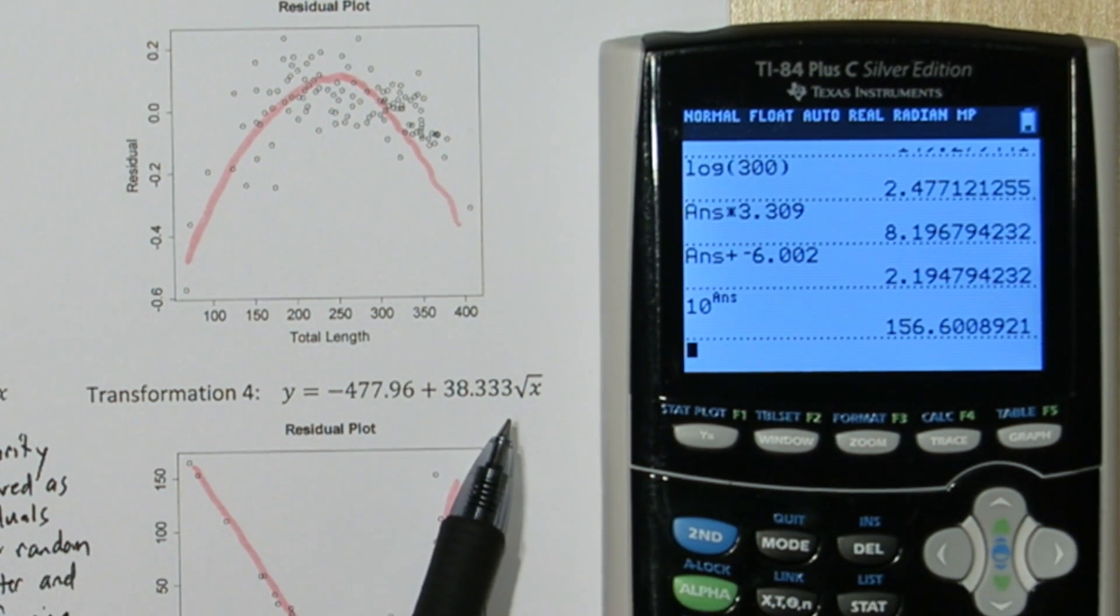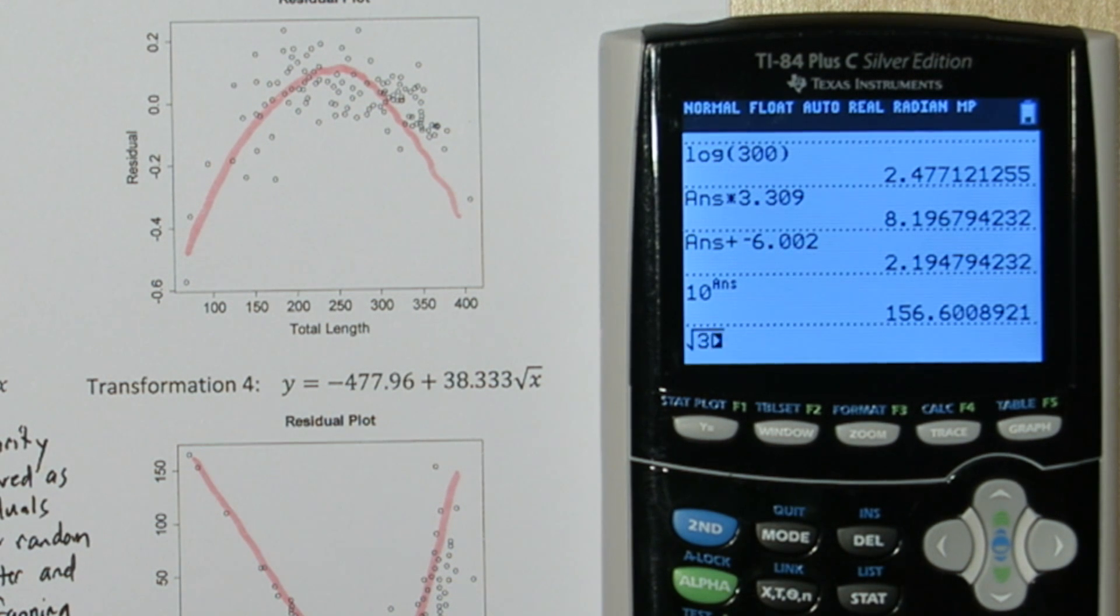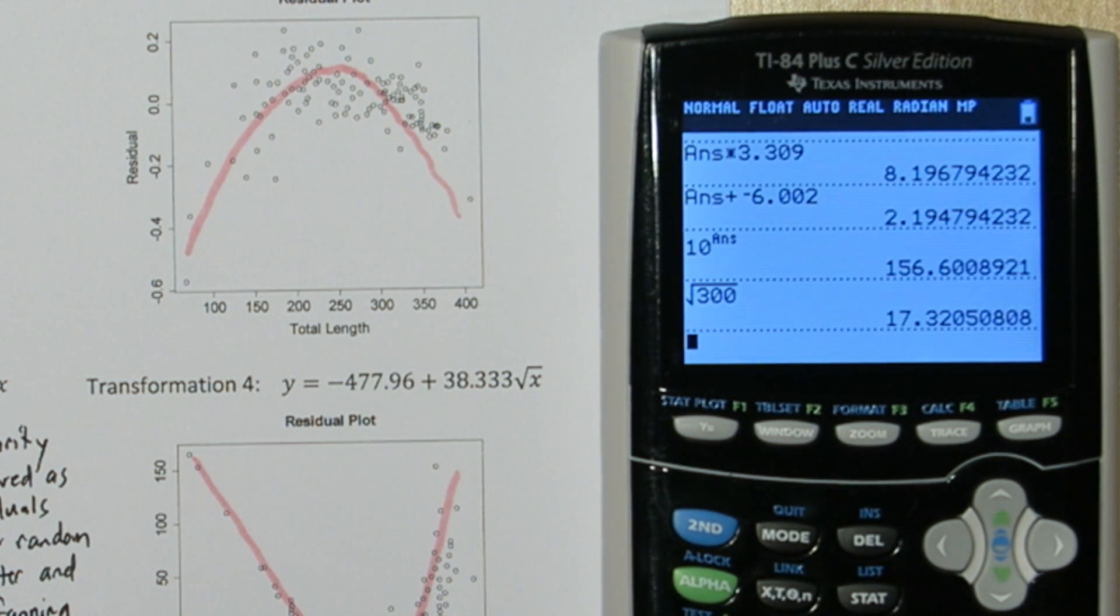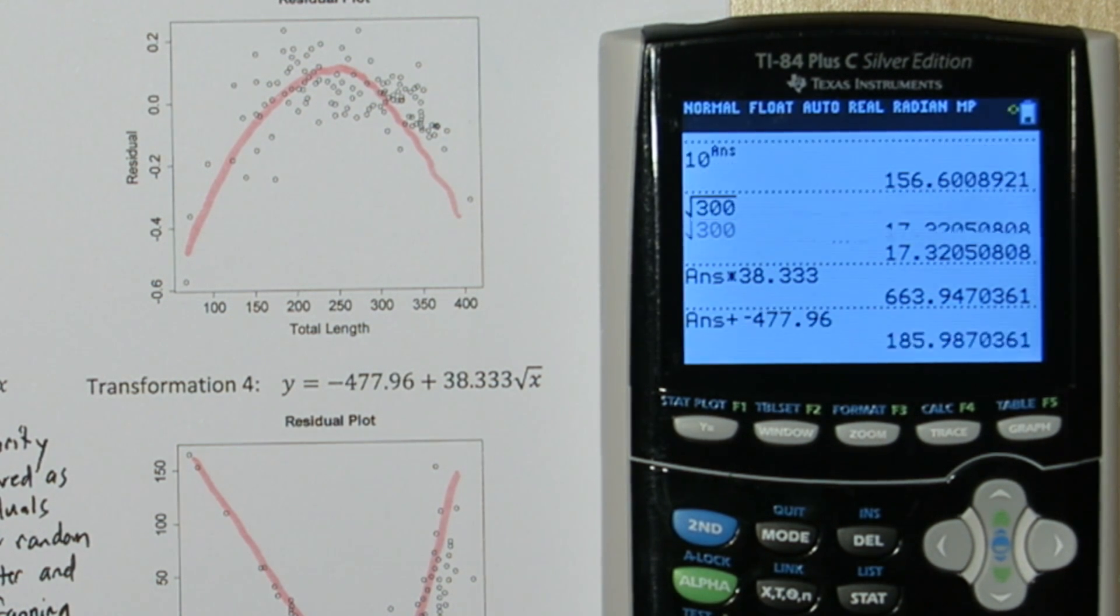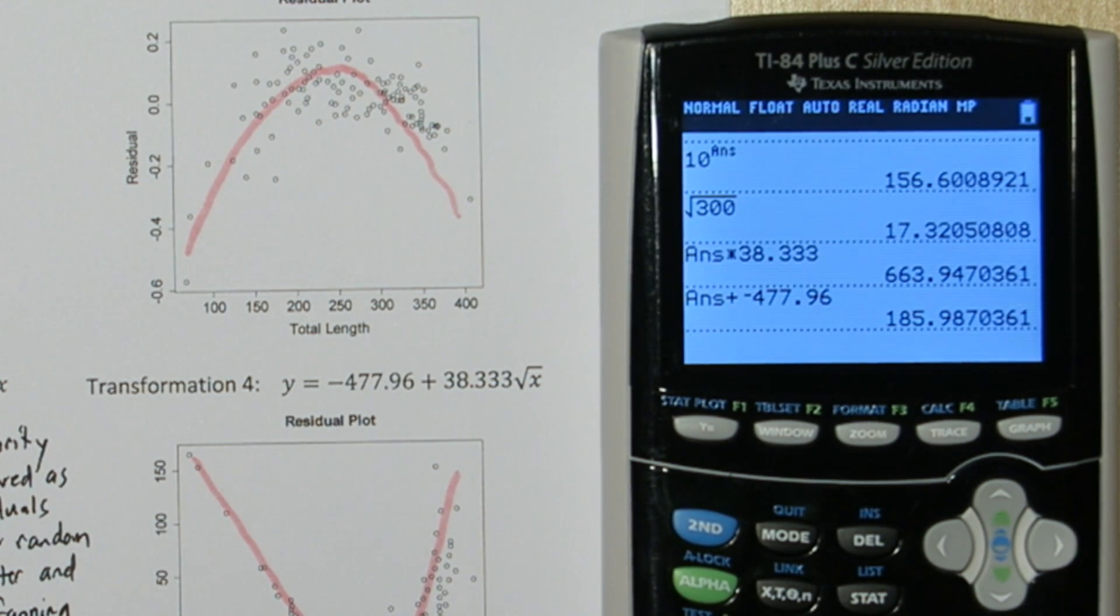Our last model, we have to take the square root of 300. Then multiply it by our coefficient. And add in our y-intercept. Alright, this model predicts the shark will be about 185.99 kg.